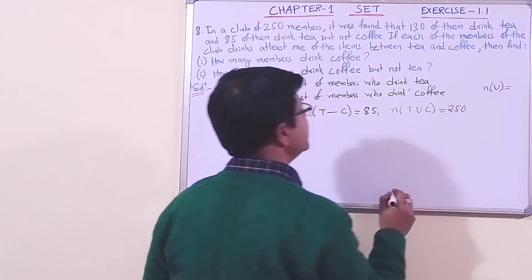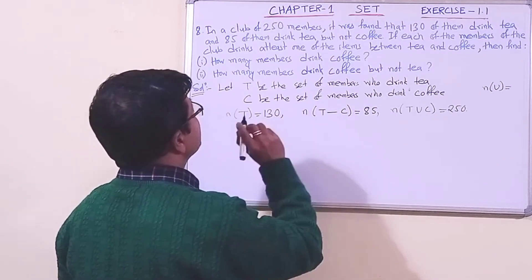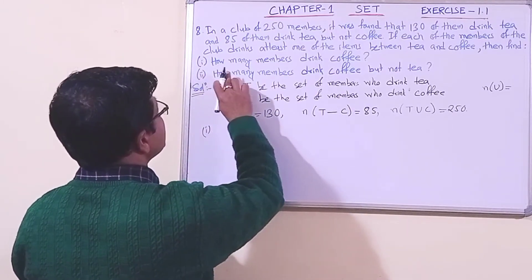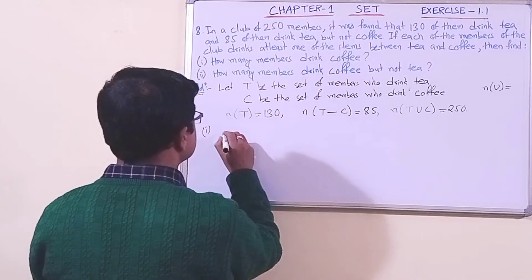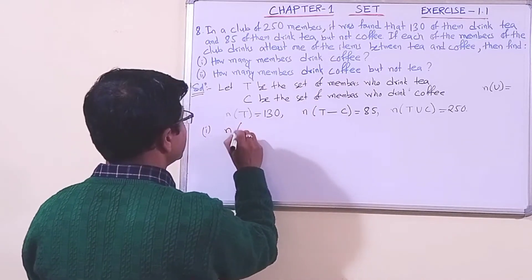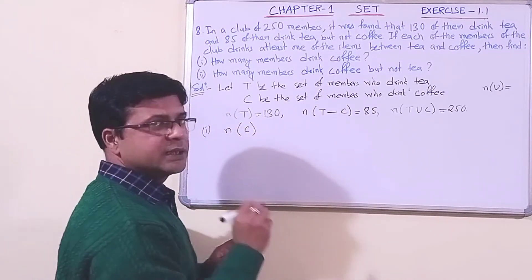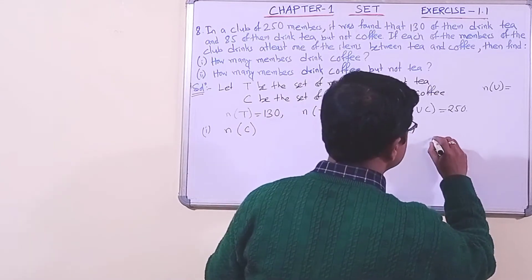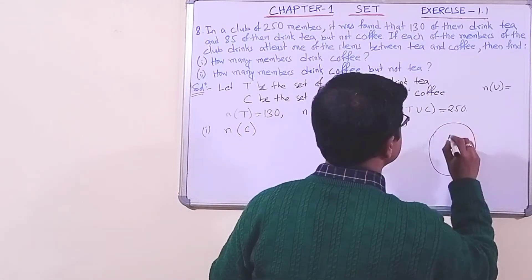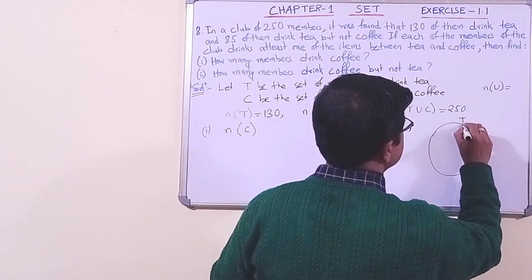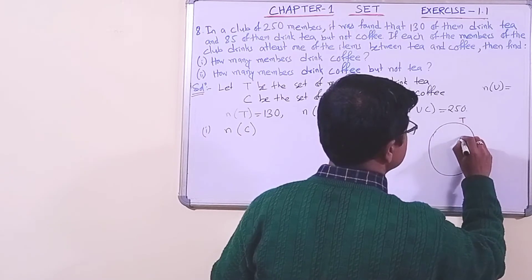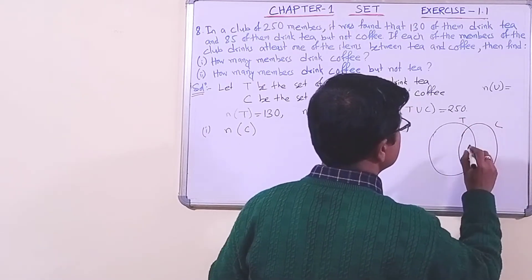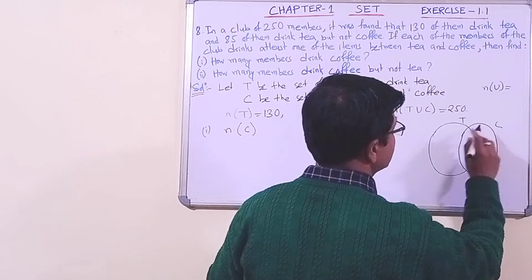Do not misunderstand this by taking n(U). Now in number one we are going to find how many members drink coffee, that is n(C). Let us draw the Venn diagram first — it will be easier for us. This set is for T and this set is for C.